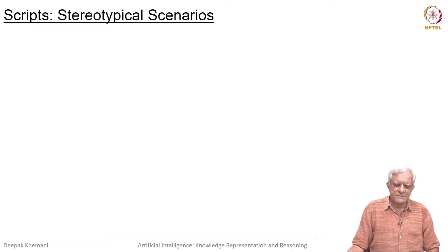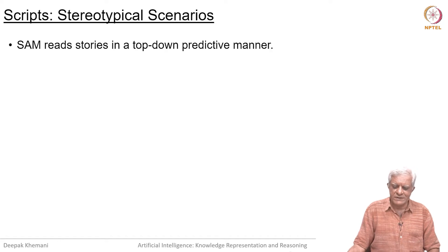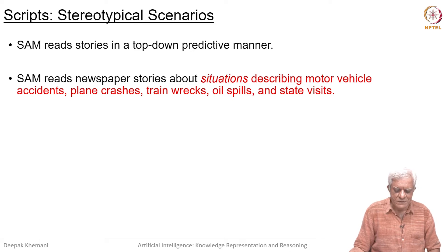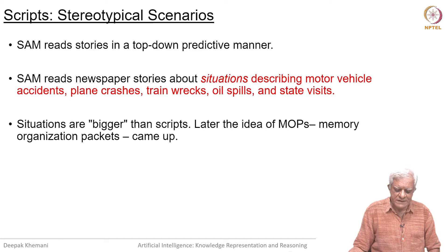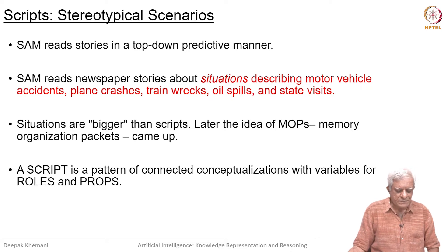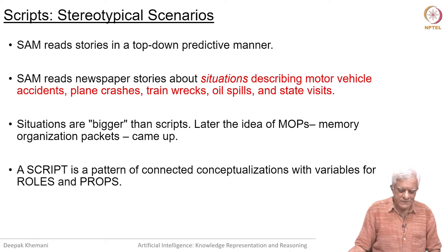Scripts are stereotypical scenarios — they capture stereotypical scenarios and read stories in a top-down predictive manner. SAM reads stories about situations describing motor vehicle accidents and plane crashes and so on. Situations are bigger than scripts, and later an even bigger idea called MOPs, or memory organization packets, came up, which is closer to a combination of frames and scripts. A script is a pattern of connected conceptualizations with variables for roles and props.